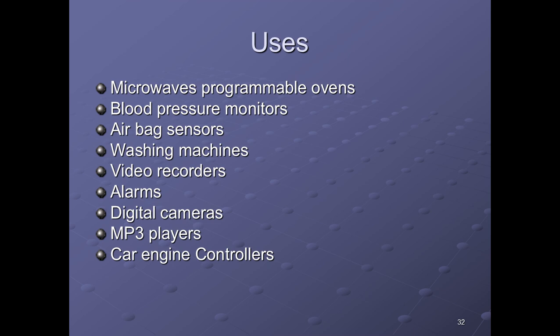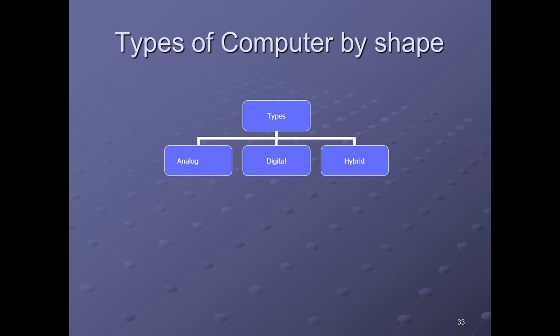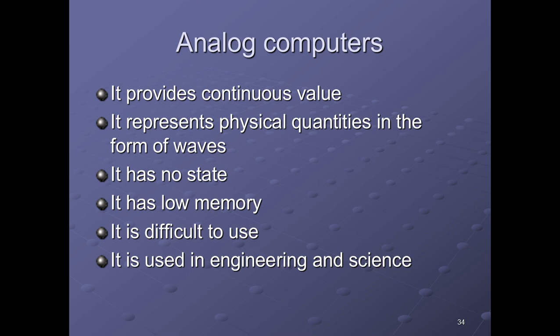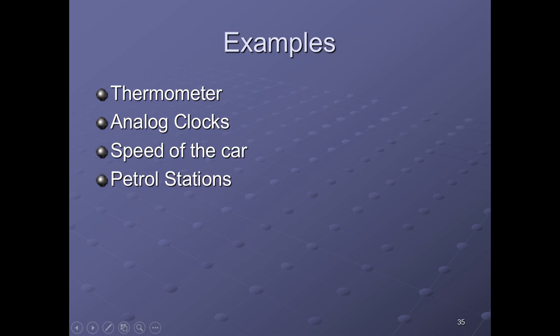Types of computer by shape or classification of computer: we have three types — analog, digital, and hybrid computers. Analog computers produce continuous values and represent physical quantities in the form of waves. They have no discrete state, low memory, and are difficult to use. They are used in engineering and science. Examples include thermometers, analog clocks, speedometers, and petrol stations.